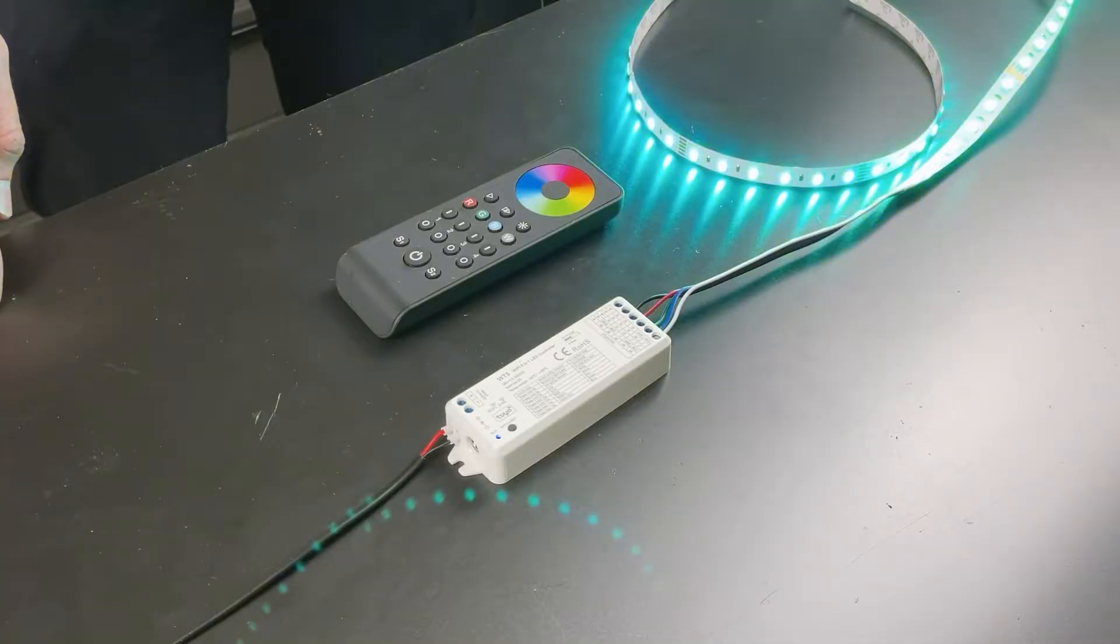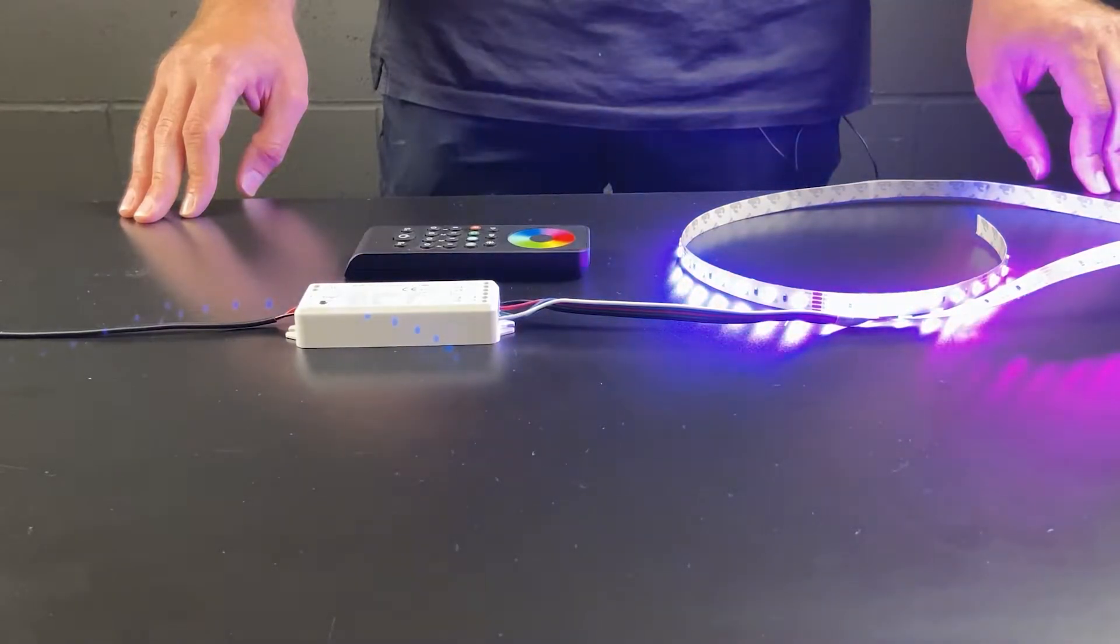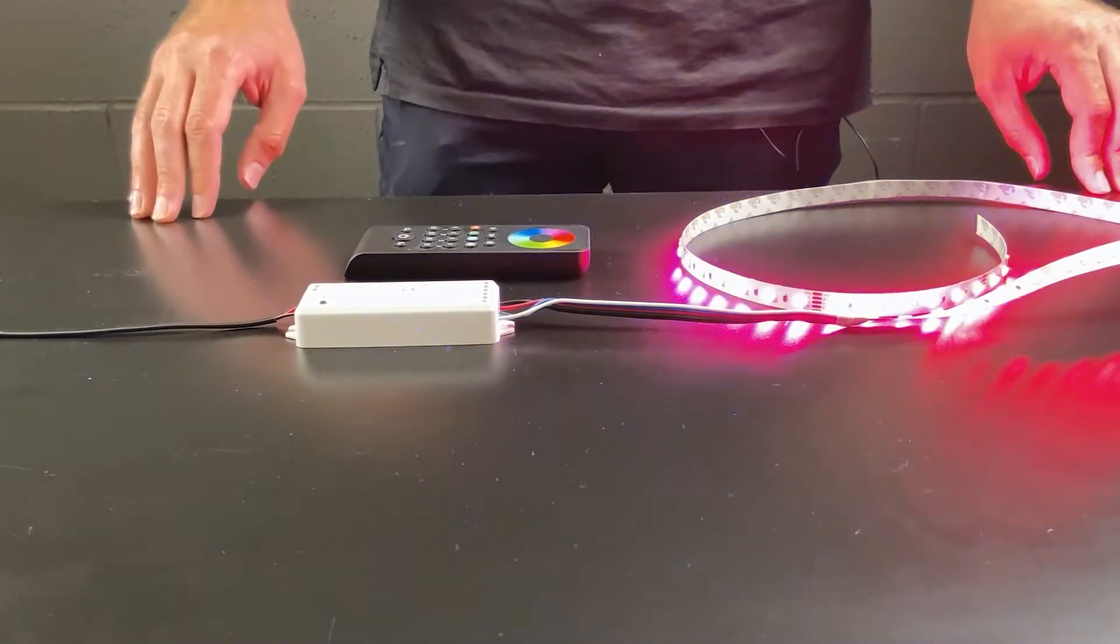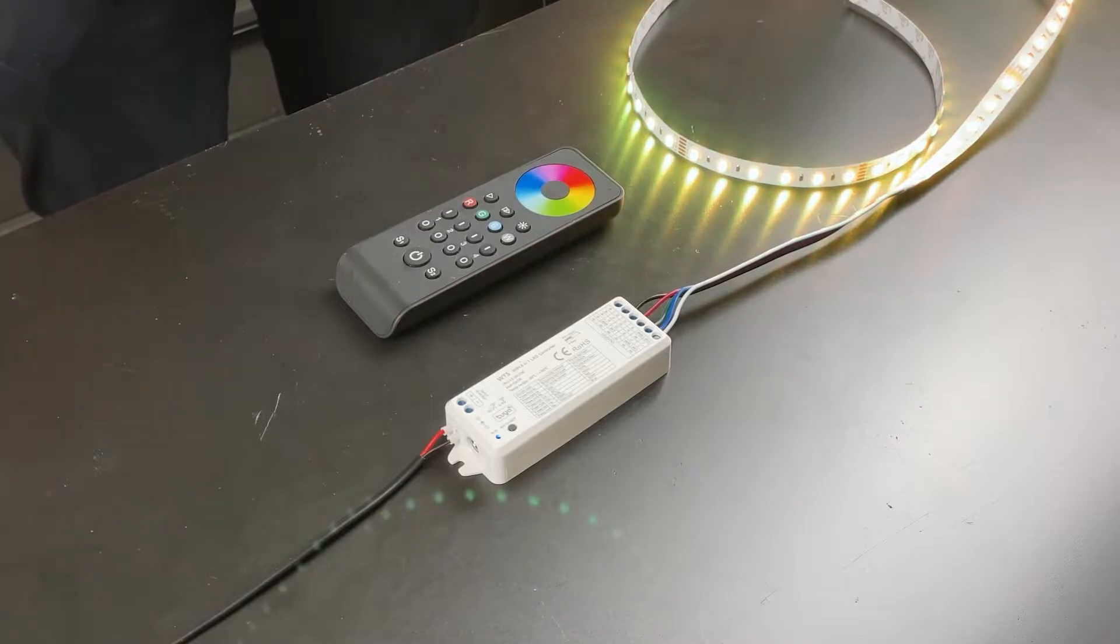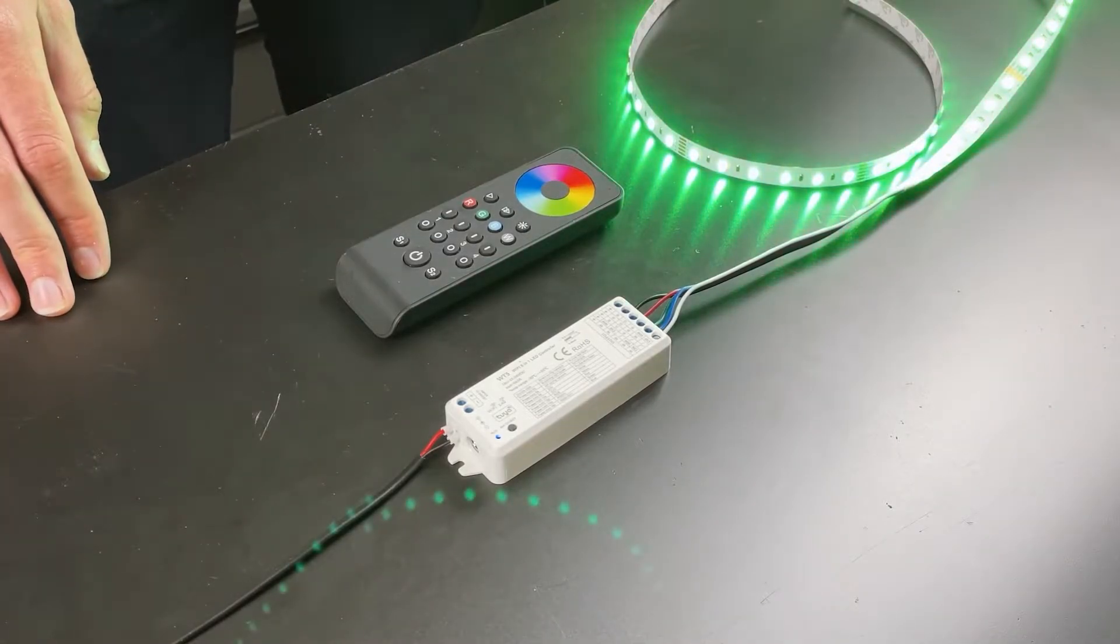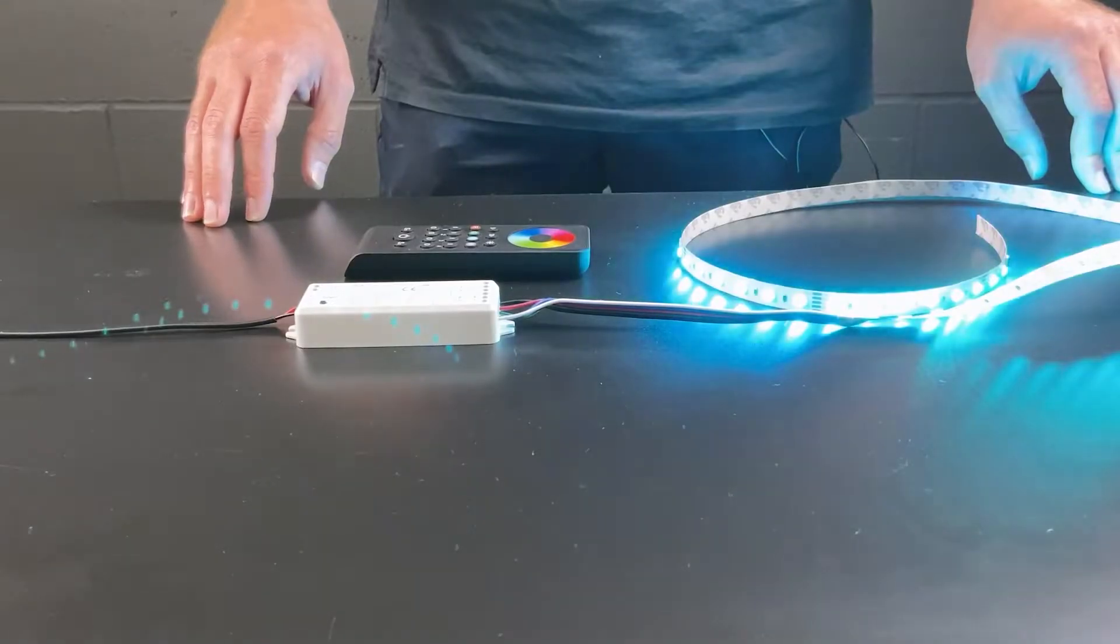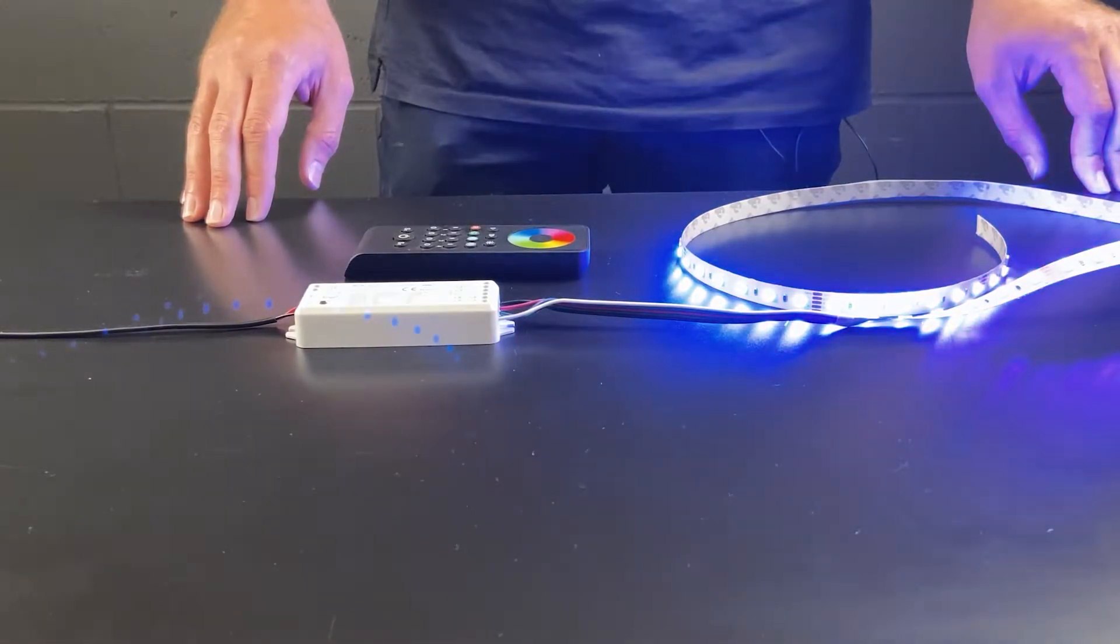This product has also been used as a prosumer product for some small venues, small retail installations, and some small temporary event installations. In short, this product is perfect for small installations which require simple and effective color-changing and dimming in low-demand settings.